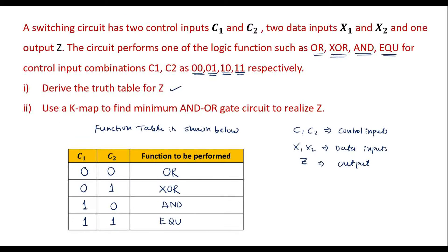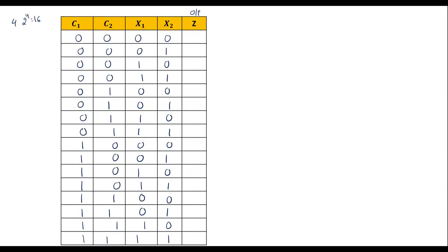When C1 is 0 and C2 is 0, it performs the OR operation. Here we can see that for combinations 0000, 0001, 0010, and 0011, C1C2 = 00, so from these rows it should perform the OR operation.